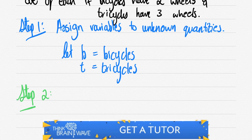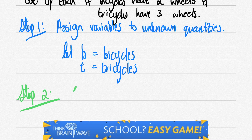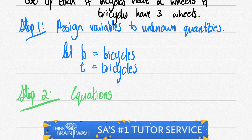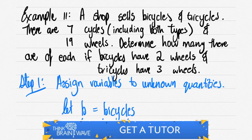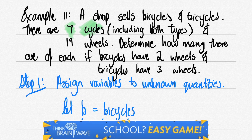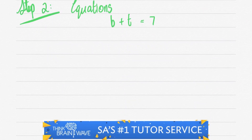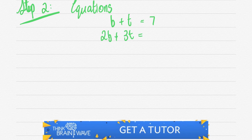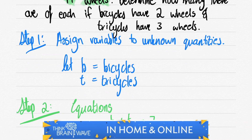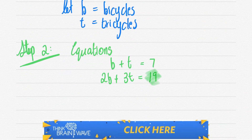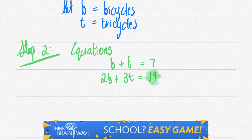In our second step we create a set of equations. We know that there are seven cycles total, meaning b plus t is equal to seven. We also know there are two wheels per bicycle and three wheels per tricycle, and the total number of wheels is 19, giving us 2b plus 3t equals 19.